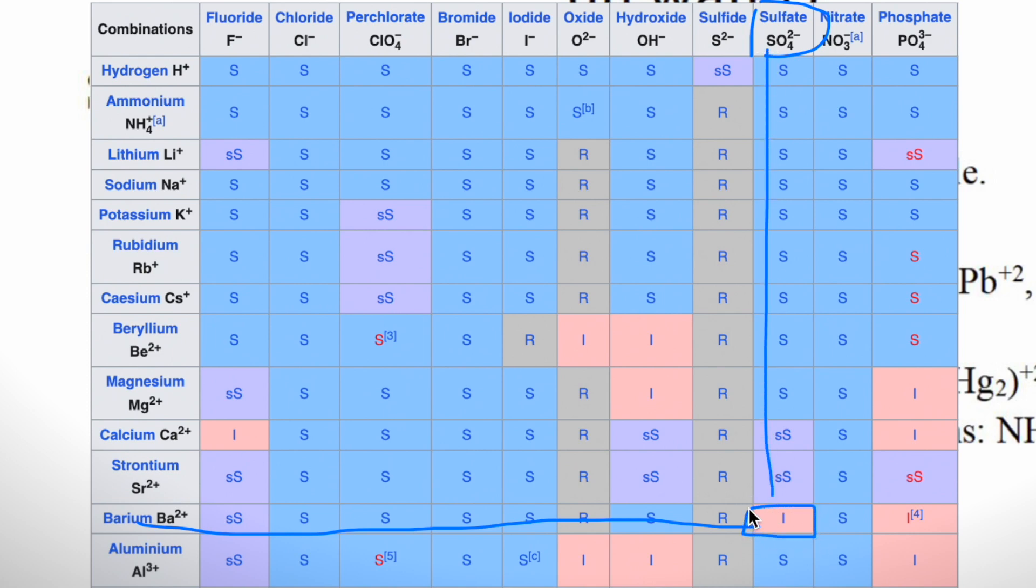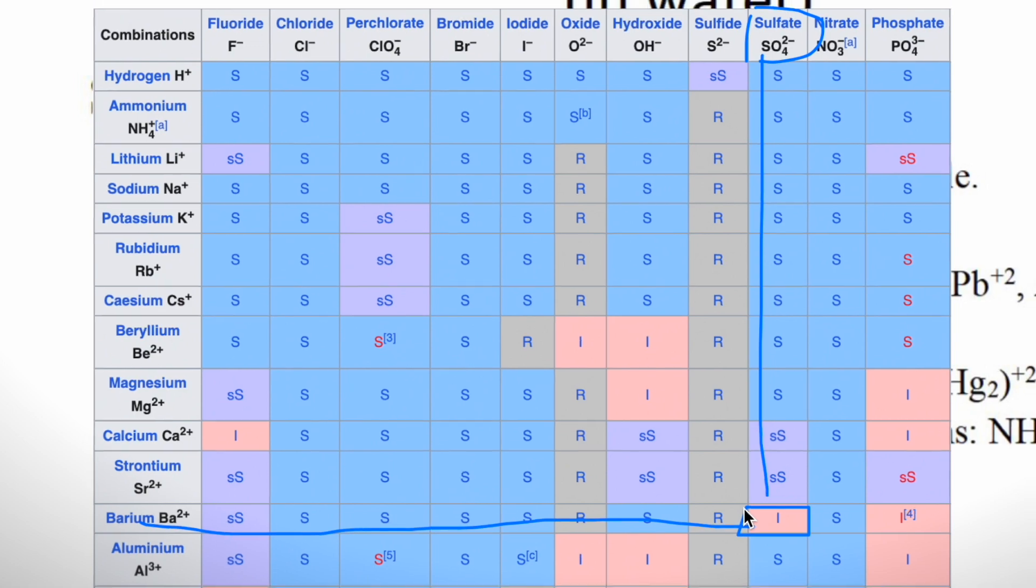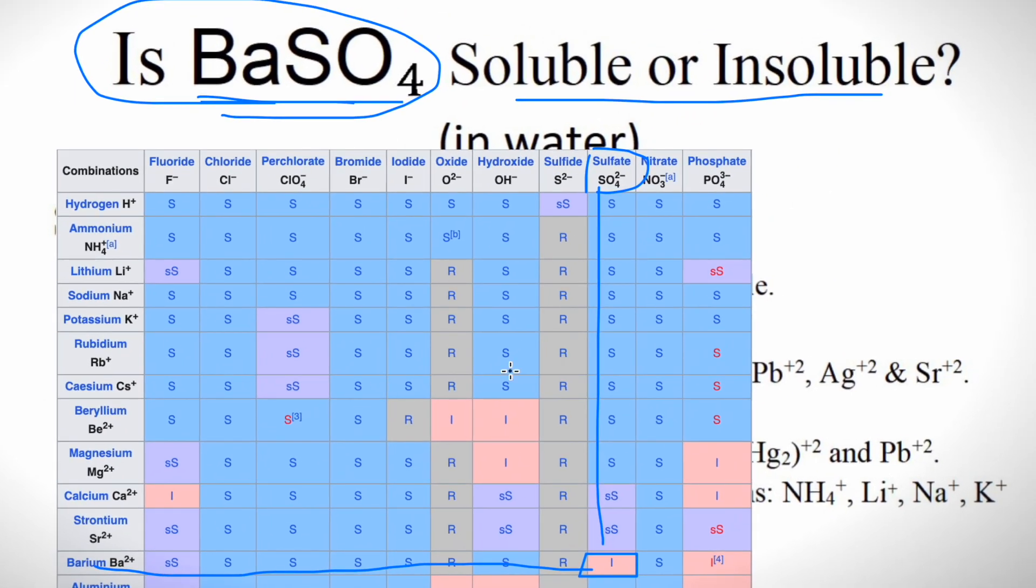Going down, we get 'I', which means it is insoluble in water. Another best way to find out is to take some barium sulfate in a test tube and add water to it. Try to dissolve it—we will see that it won't dissolve. So the answer is barium sulfate is insoluble in water.